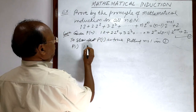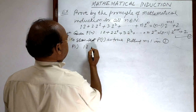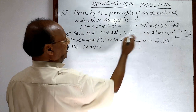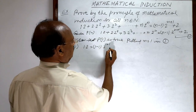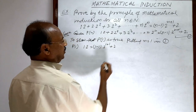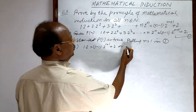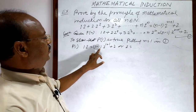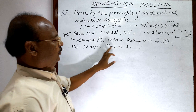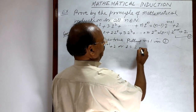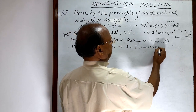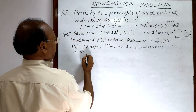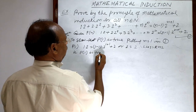So the first term is 1·2, and the right hand side becomes (1−1)·2¹⁺¹ + 2. That gives LHS = 2, and on the right hand side, 0·2² + 2 = 0 + 2 = 2. Therefore LHS = RHS, which means P(1) is true.